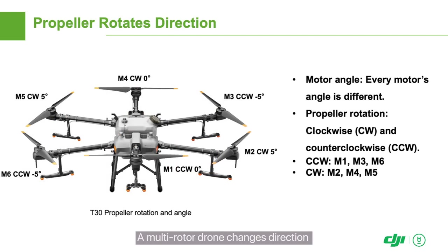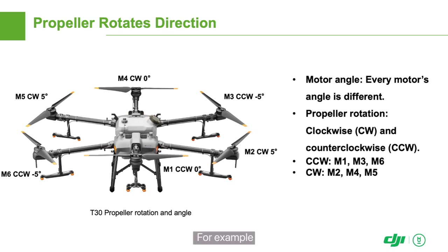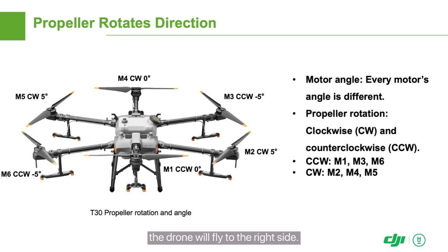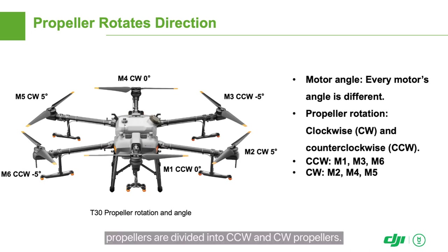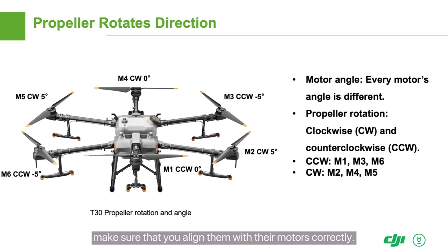A multi-rotor drone changes direction by changing the speed of its different motors. For example, if the speed of the left motor is higher, the drone will fly to the right side. Half of the drone's propellers rotate counterclockwise and the other half rotate clockwise. Accordingly, propellers are divided into CCW and CW propellers. Before installing propellers, make sure that you align them with their motors correctly.